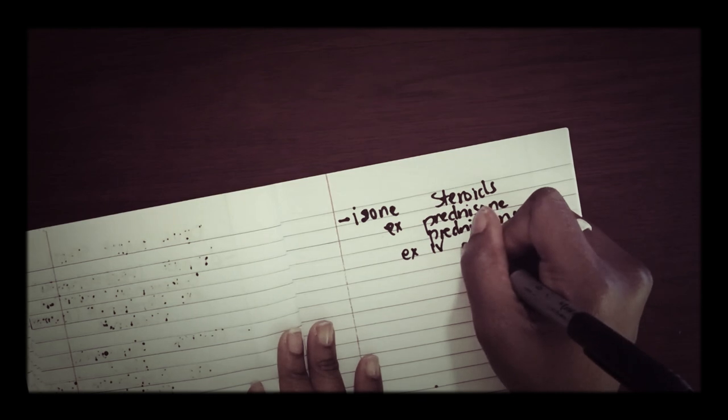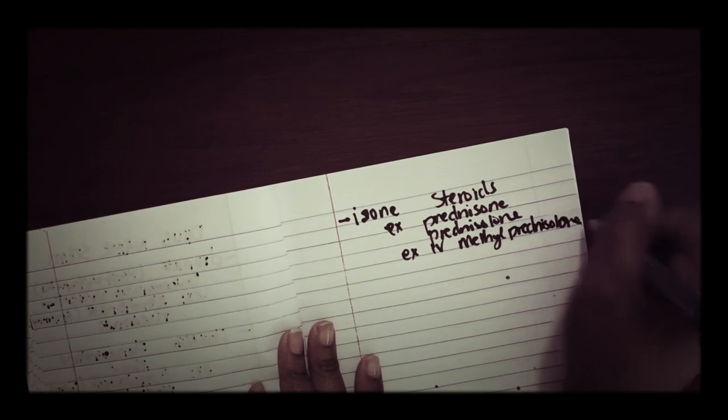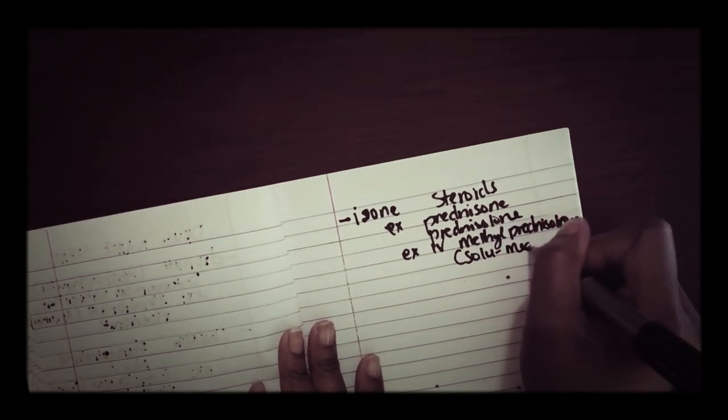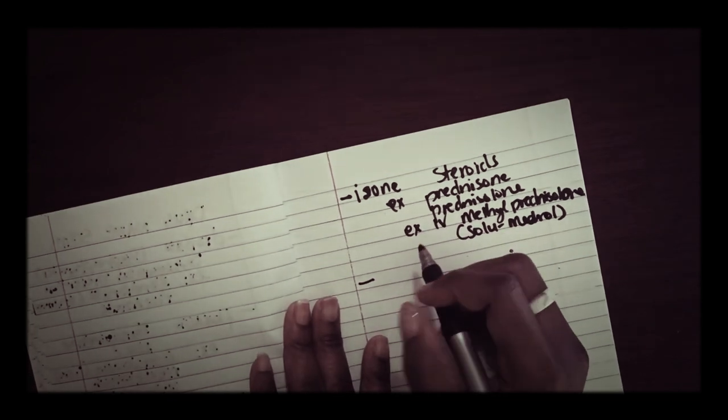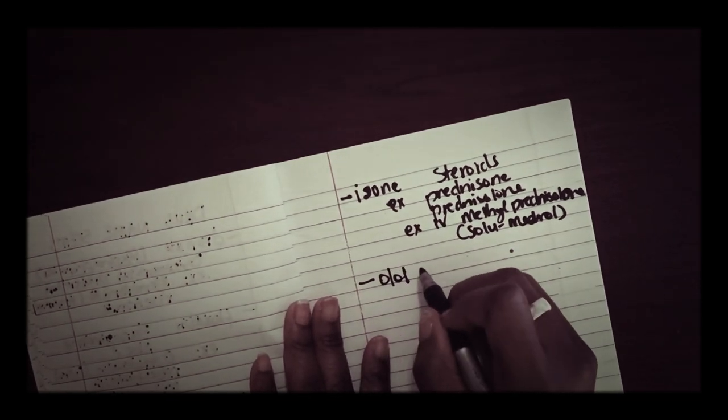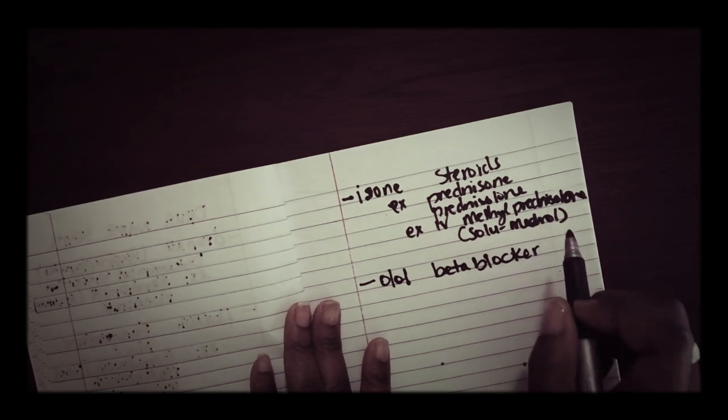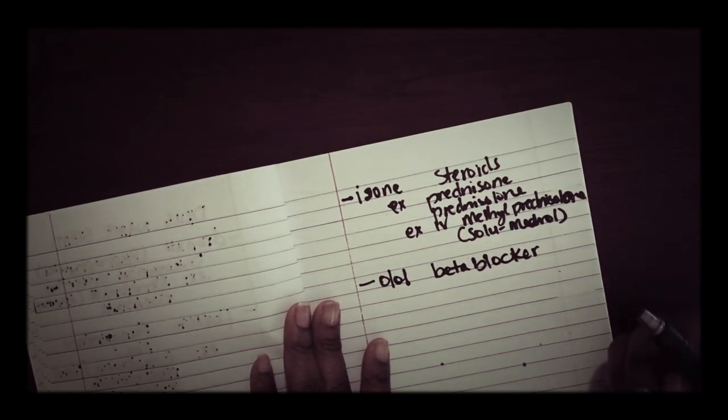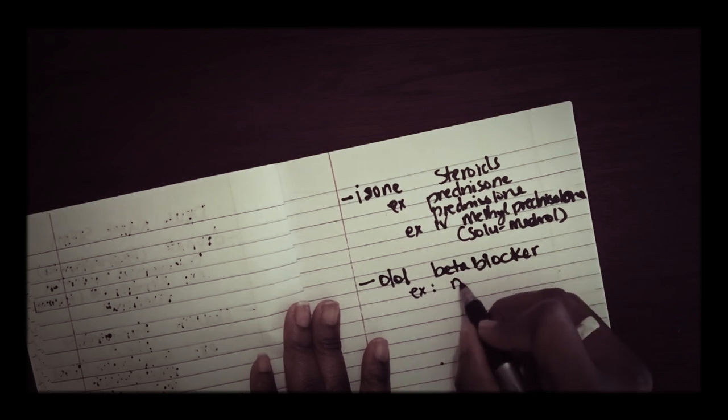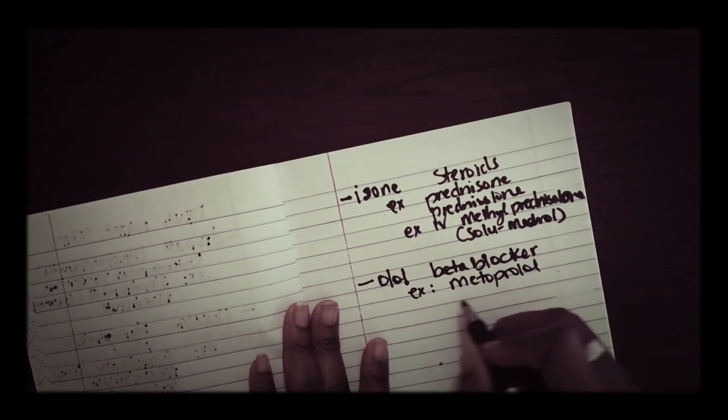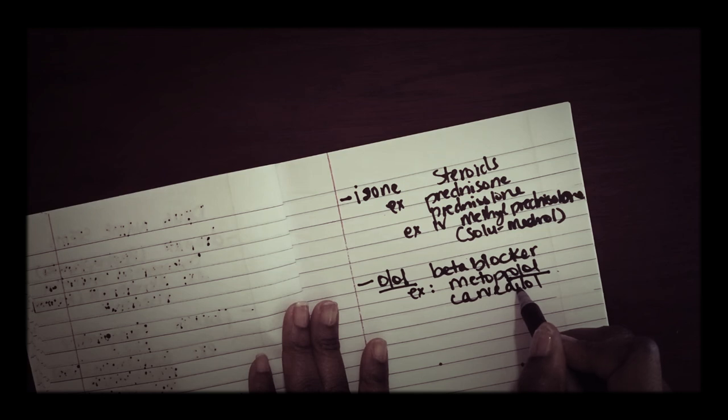Then we have our beta blockers which end in -olol. We must not forget our beta blockers. It's a very common class of medications and they're used to treat arrhythmias and high heart rate. Example is a popular one is metoprolol, we have our carvedilol, and you see how they end in -olol.